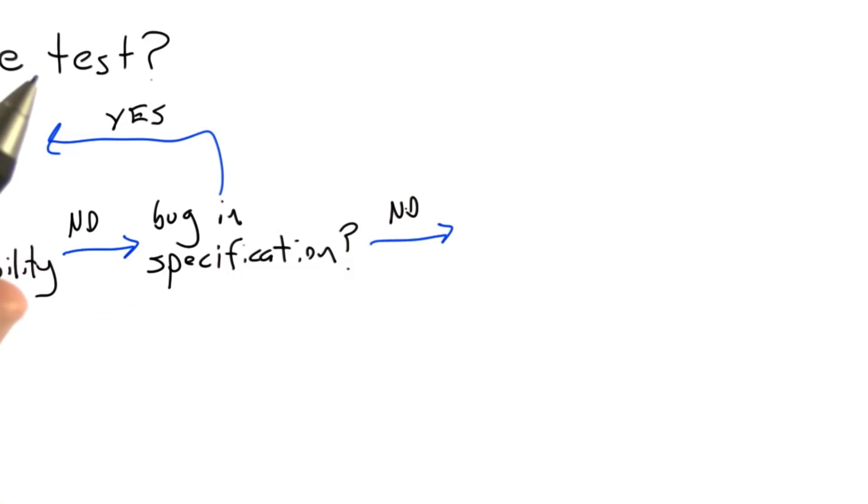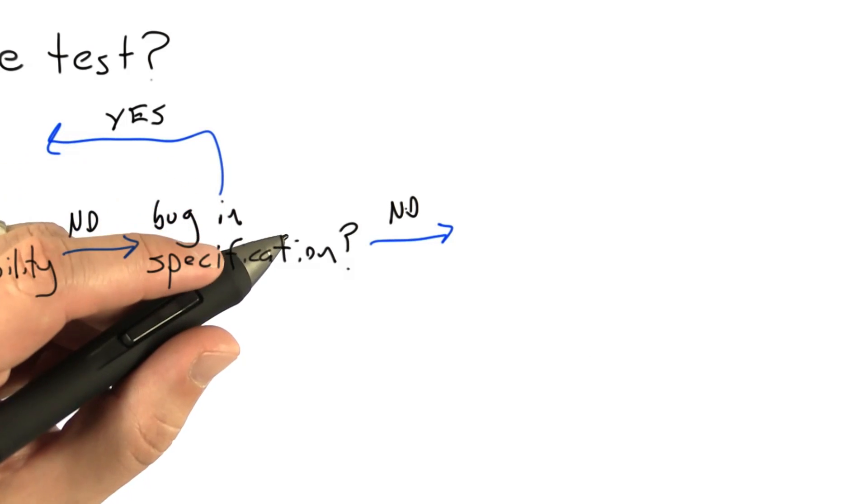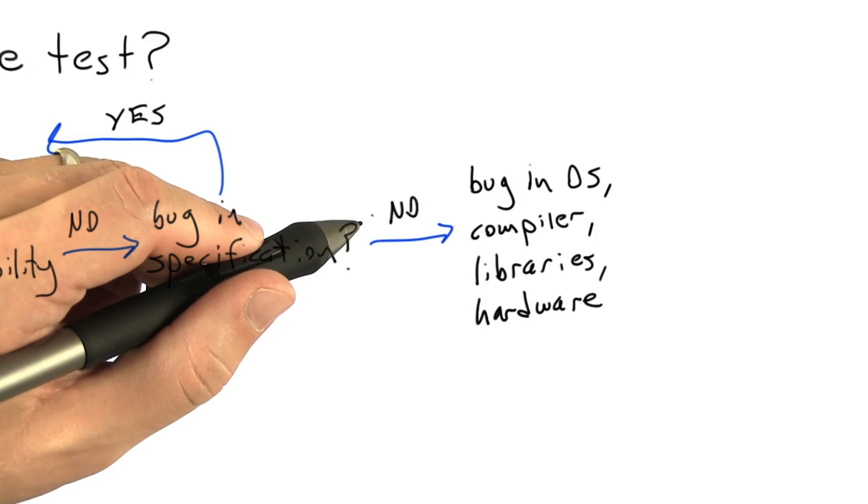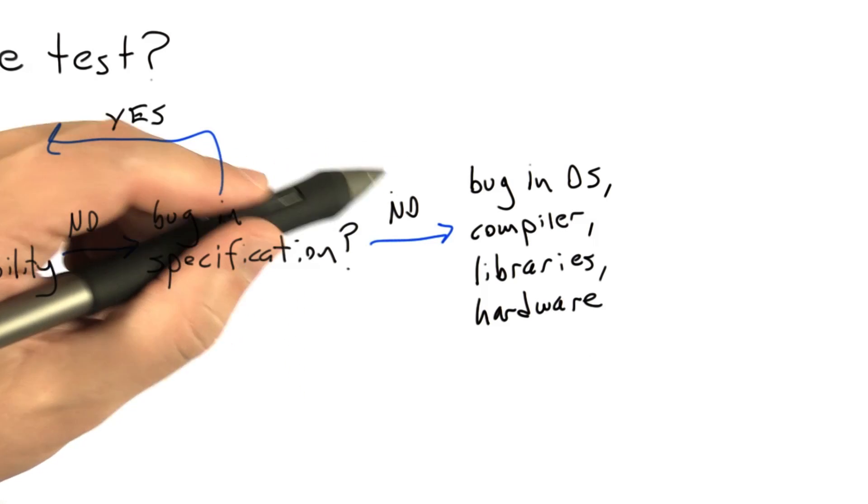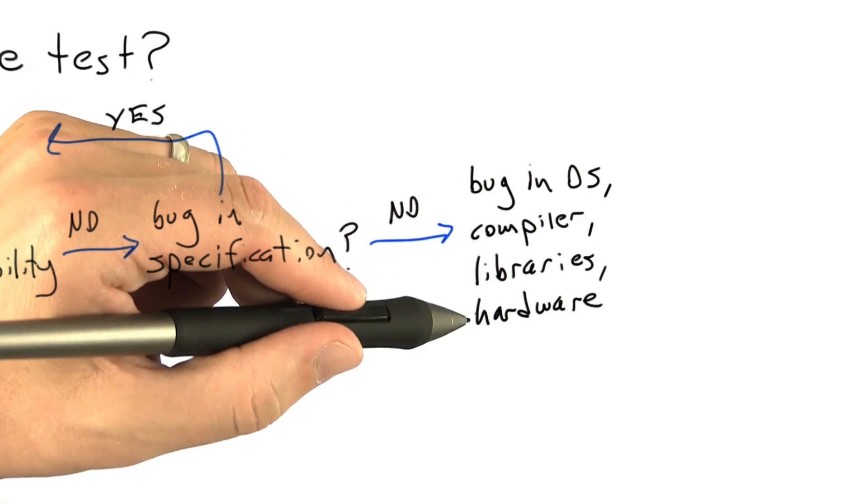So if that's not the case though, if the bug was not in our acceptability check, not in the software under test, and not in the specification, now we actually have some possibilities but they're getting more difficult to deal with. Some of the worst debugging stories that you hear stem from a flaw in the operating system, in the compiler, in runtime libraries, or even in the hardware.